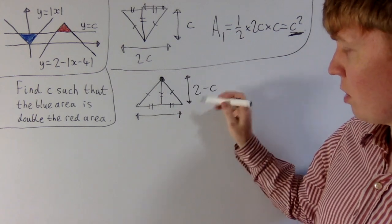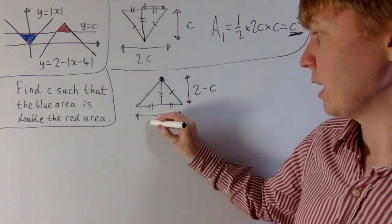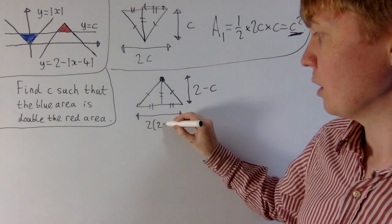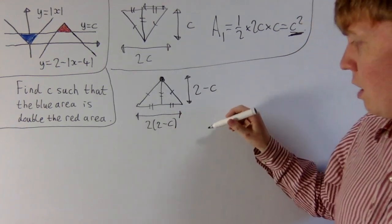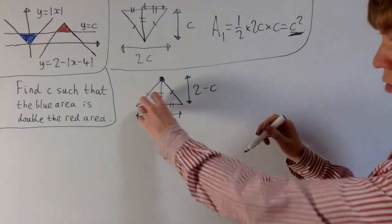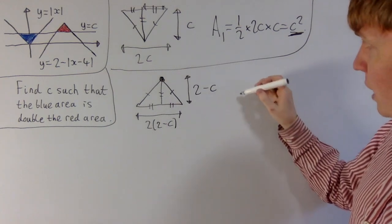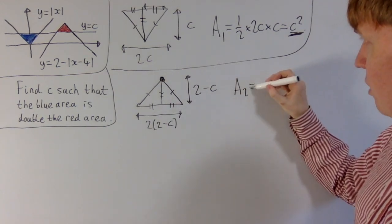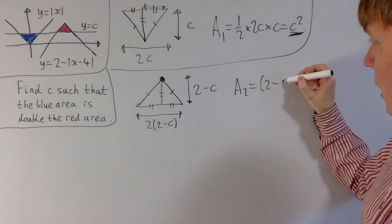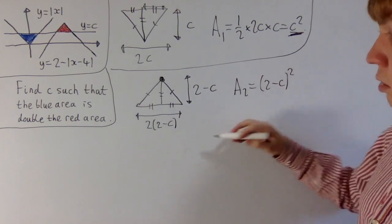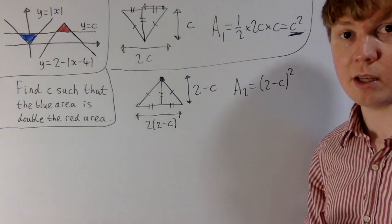And then you can see here the width, just like before, is going to be 2 times 2 minus c, or 4 minus 2c. So this tells us, just like before, you could turn this into a square of side length 2 minus c, and you'll see that a2 is going to be 2 minus c all squared. Or you could also do half times base times height, you would get the same thing. So what I'll do now is, I'll clear the board, and then we'll just do the calculations.